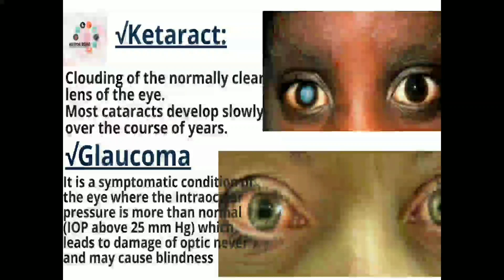Next is cataract. As you can see in the picture, it is clouding of the normally clear lens of the eye. Most cataracts develop slowly over the course of years. Next we have glaucoma — a condition in which intraocular pressure is more than normal, about 25 mmHg, which leads to damage of the optic nerve and may cause blindness.